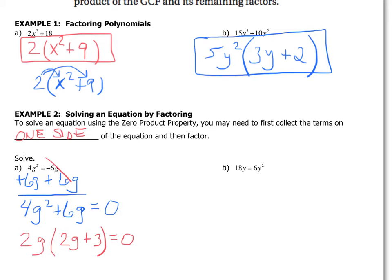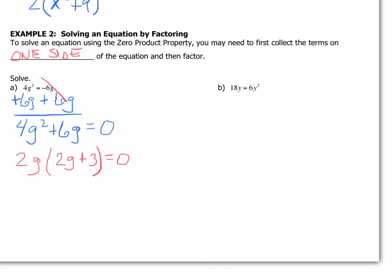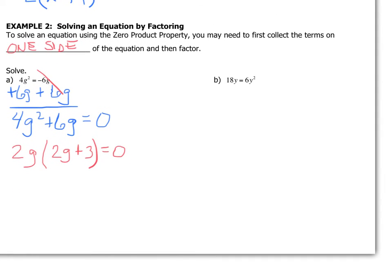So from here, I now am going to use what we learned in the last section. This is our factored form, and what I want to do next is use my zero product property to be able to find the answer of what g's will equal. So 2g equals zero or 2g + 3 equals zero.